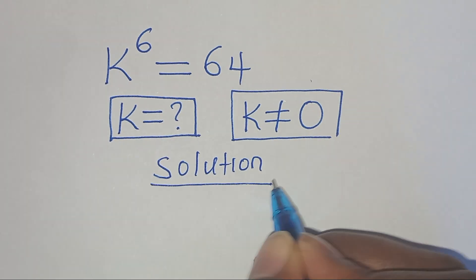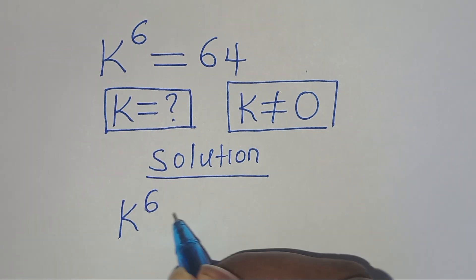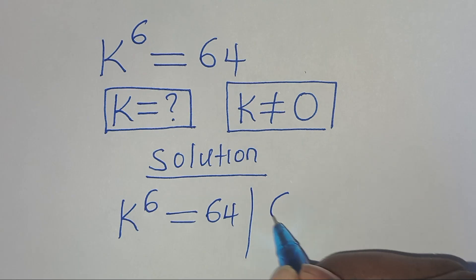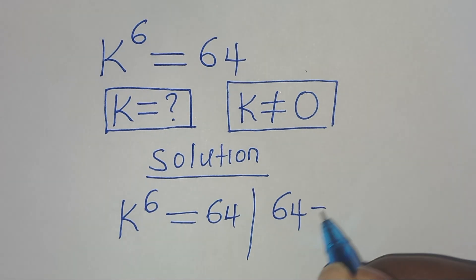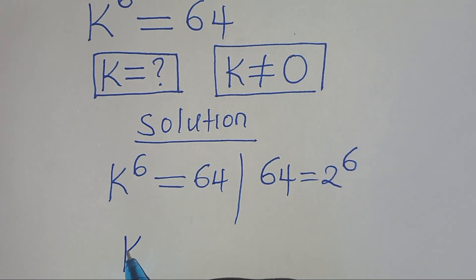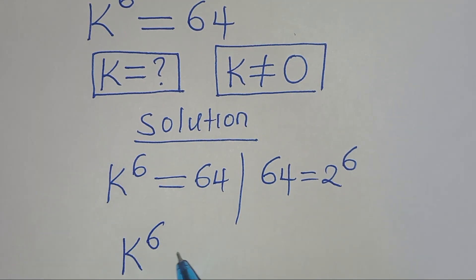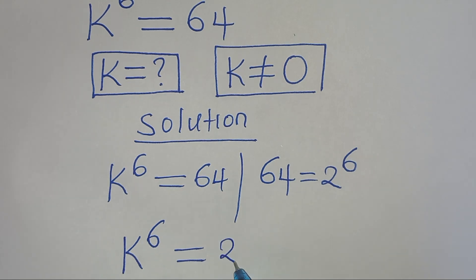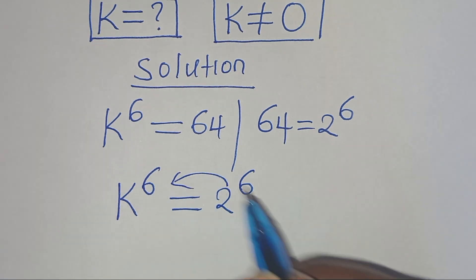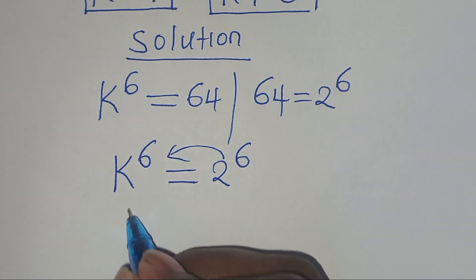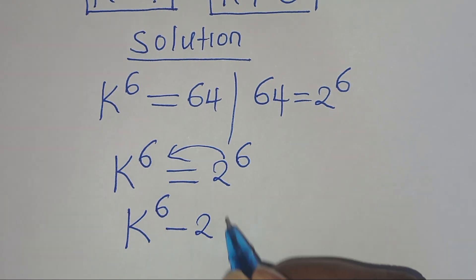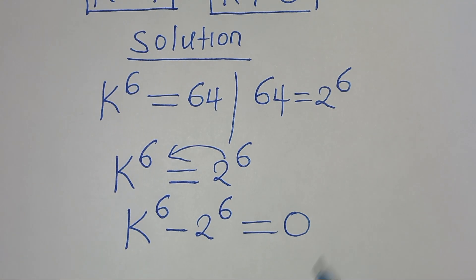We have k to the power of 6, this is equal to 64. The first step here is to express 64 as 2 to the power of 6. So we have k to the power of 6 equals 2 to the power of 6. Let's take 2 to the power of 6 on the left hand side, so that now we have k to the power of 6 subtract 2 to the power of 6, this is equal to 0.